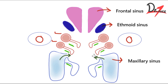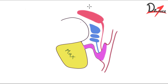There is something called the ostiomeatal complex — the area where the maxillary sinus, frontal sinus, and ethmoid sinus all drain. In the diagram, the maxillary sinus drains here, the frontal sinus drains here, and the ethmoid sinus drains here — all into the ostiomeatal complex, which lies in the middle meatus.